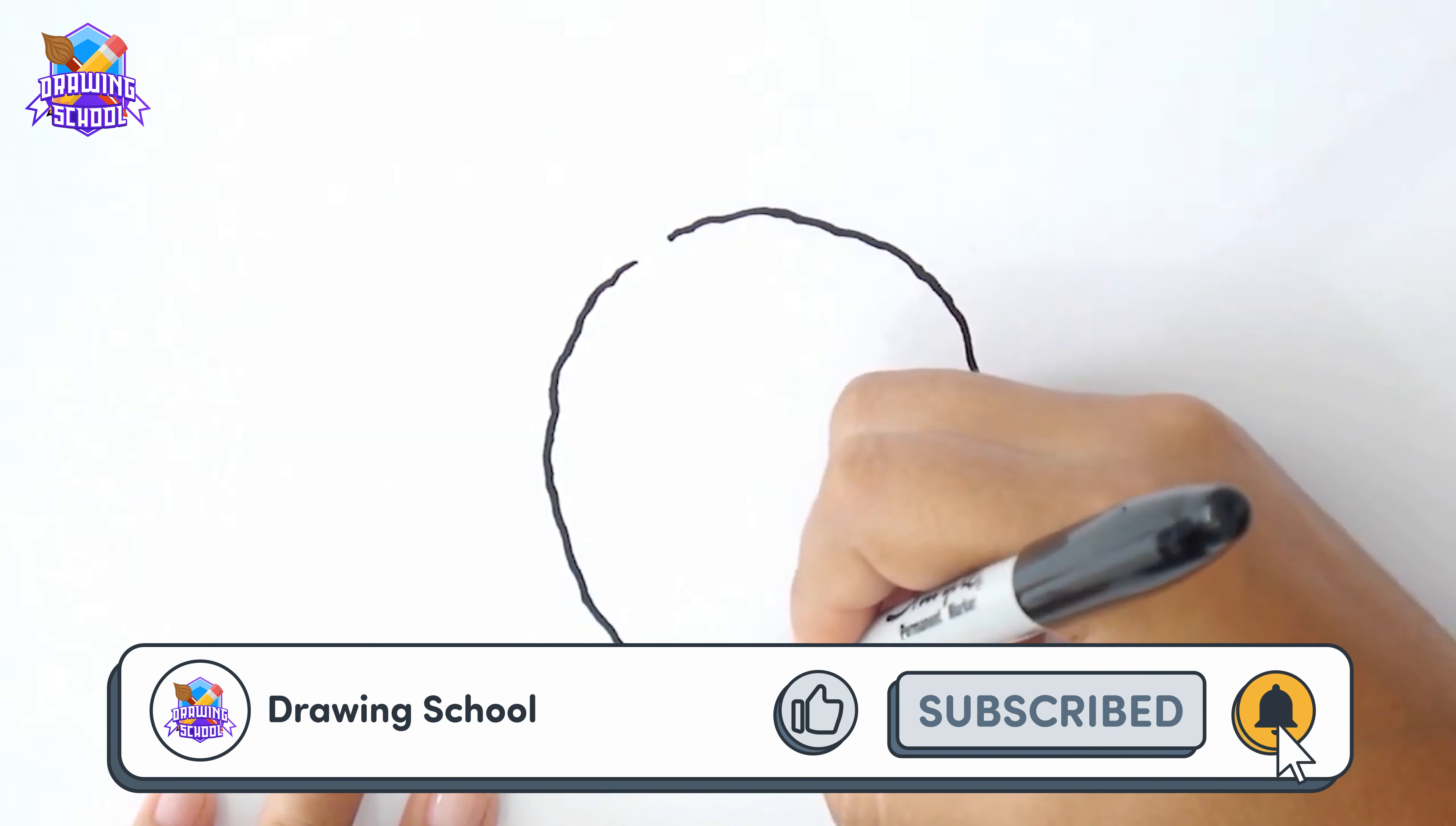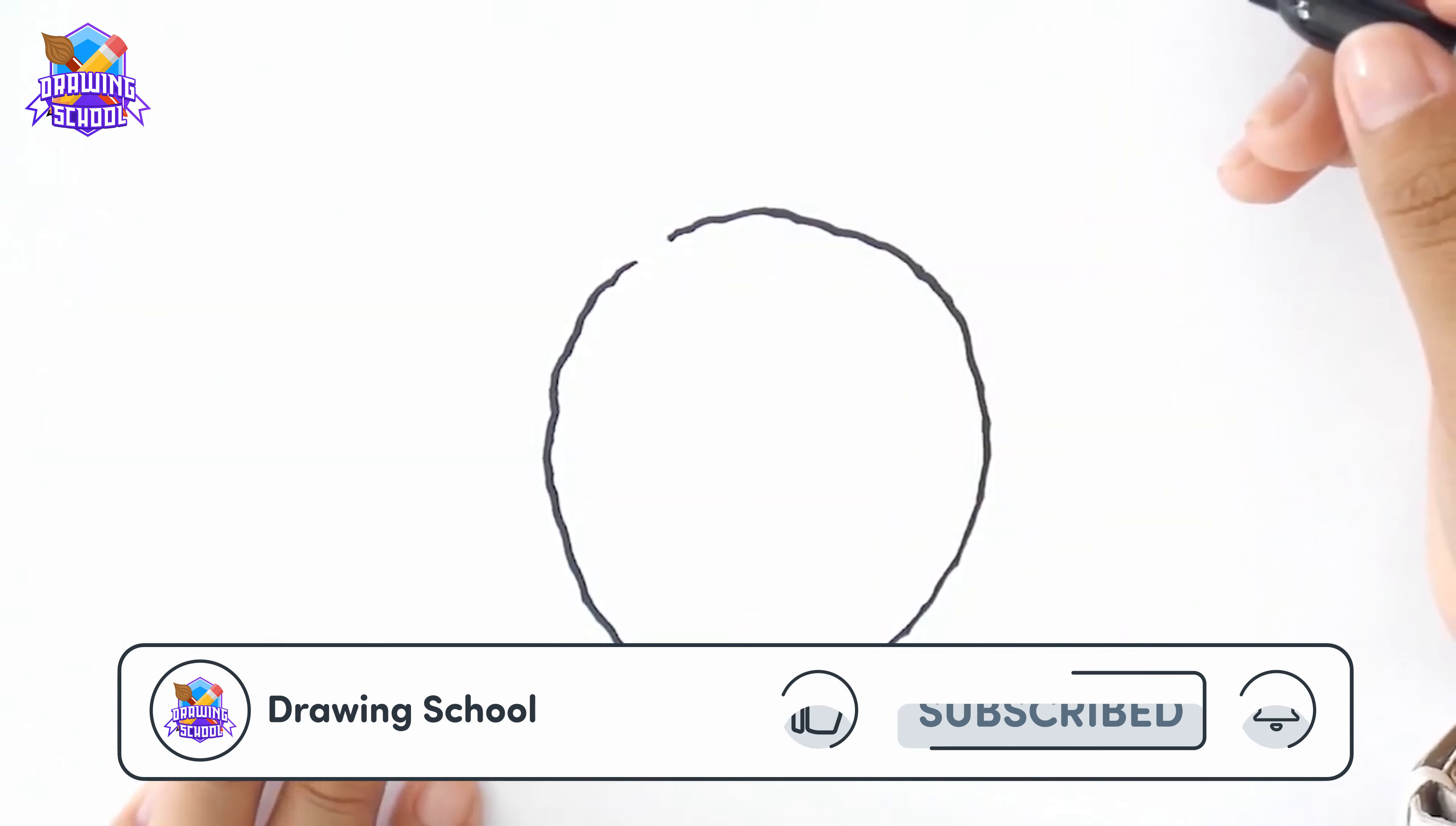I'm starting with an irregular line, like a little shaky one, drawing a half circle like this.